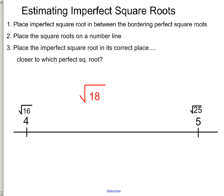The third step, place the imperfect square root in its correct place. Is it closer to the square root of 16, or is it closer to the square root of 25? Basically, 18, the square root of 18 is a lot closer to 16, so it should be closer to the square root of 16.